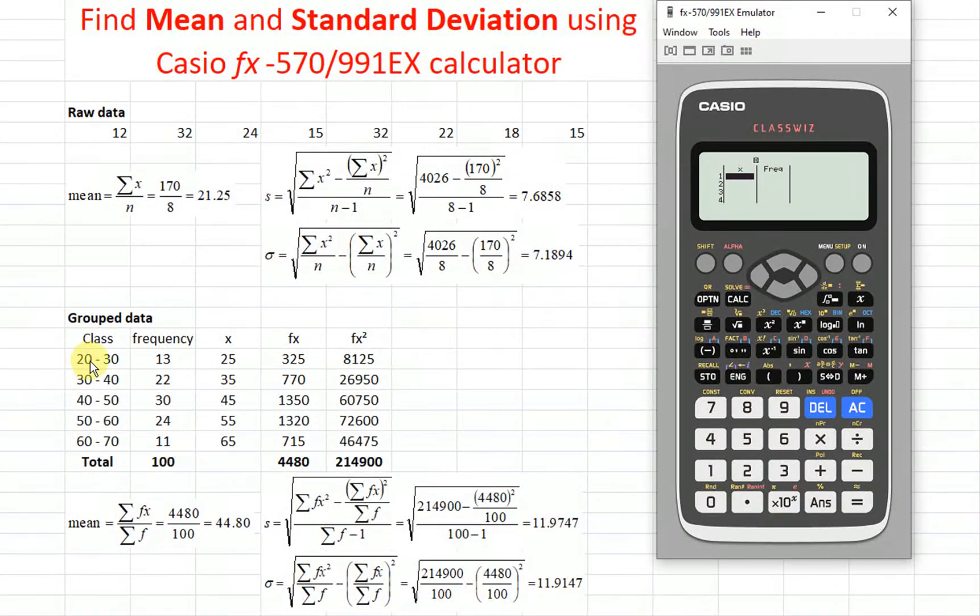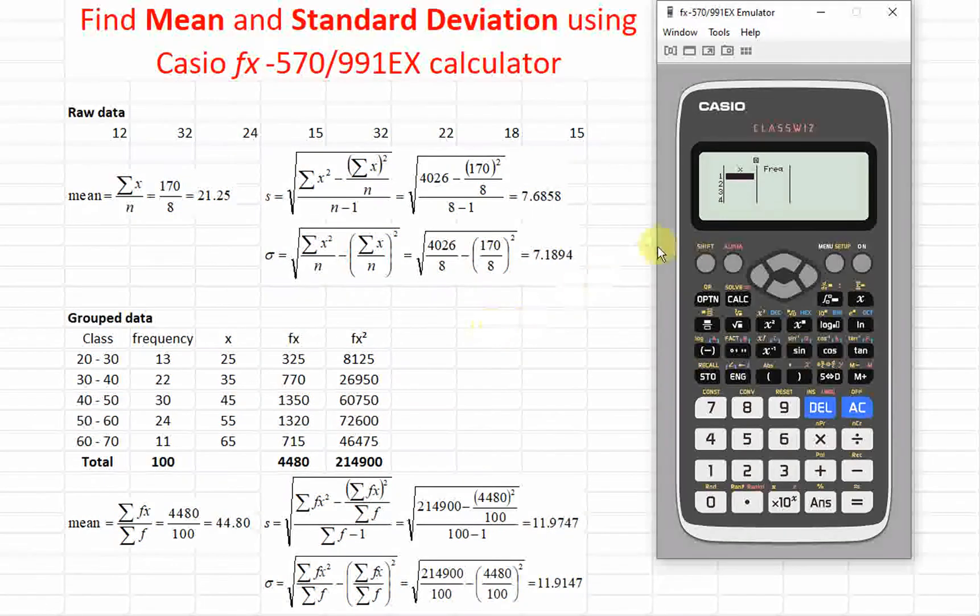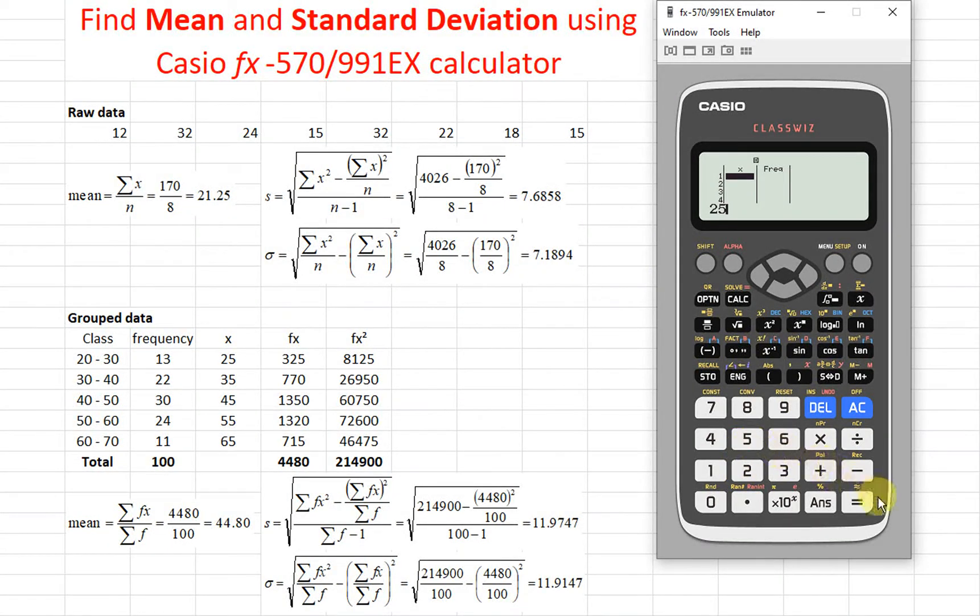Then 30 plus 40 divided by 2, we have 35 and so on. So we have 25. We just ignore the frequency first. So we have 35, 45, 55, and 65.